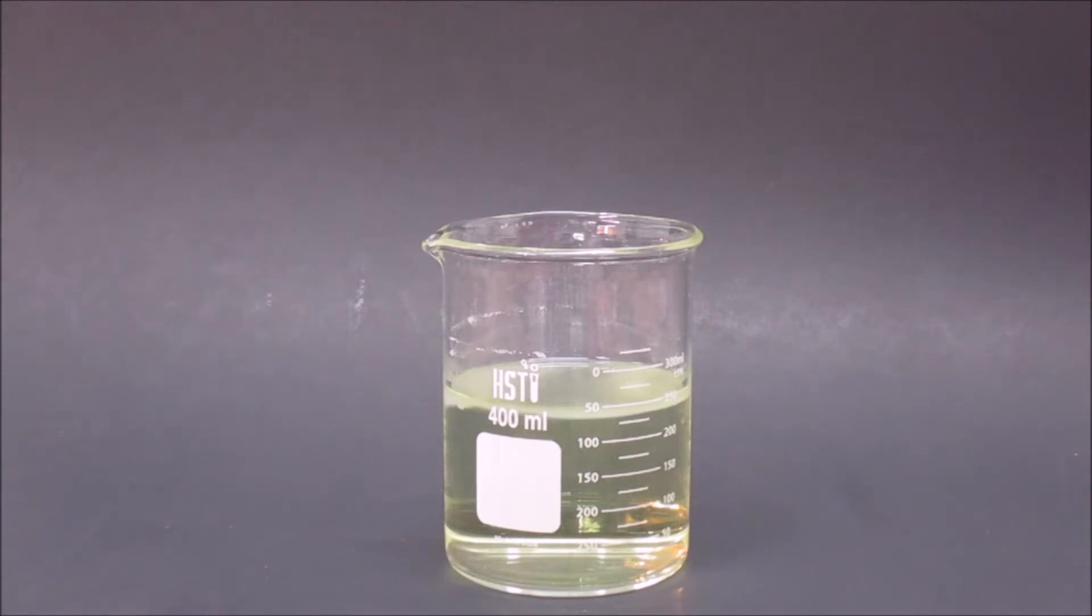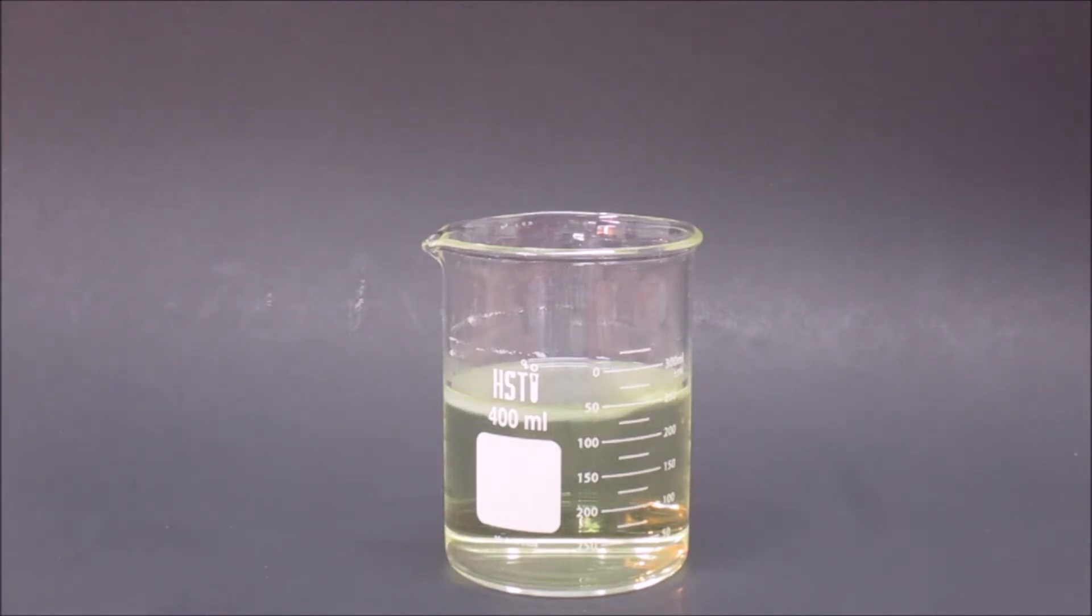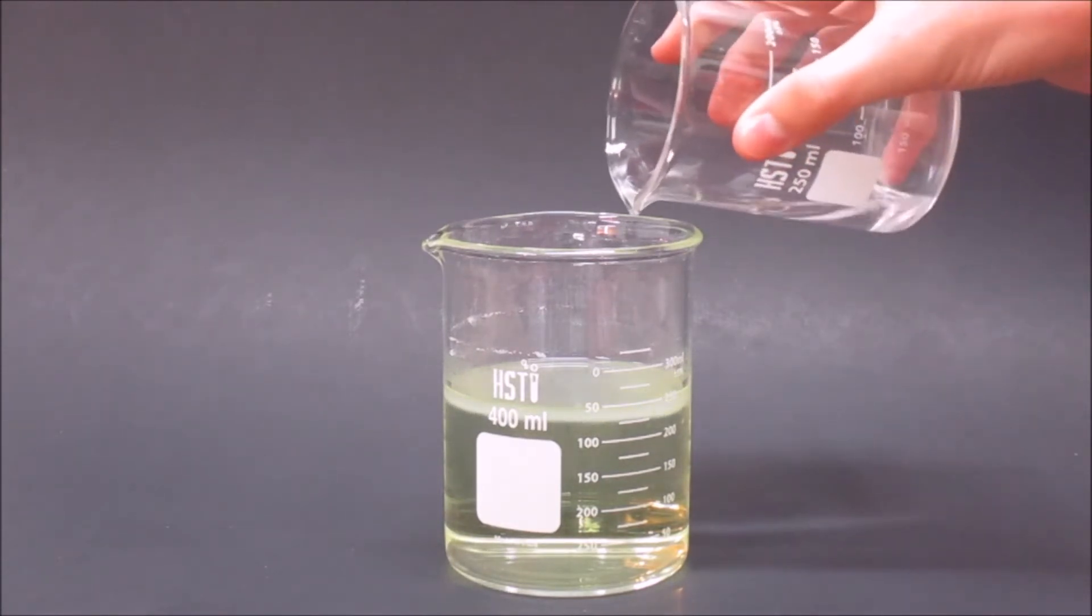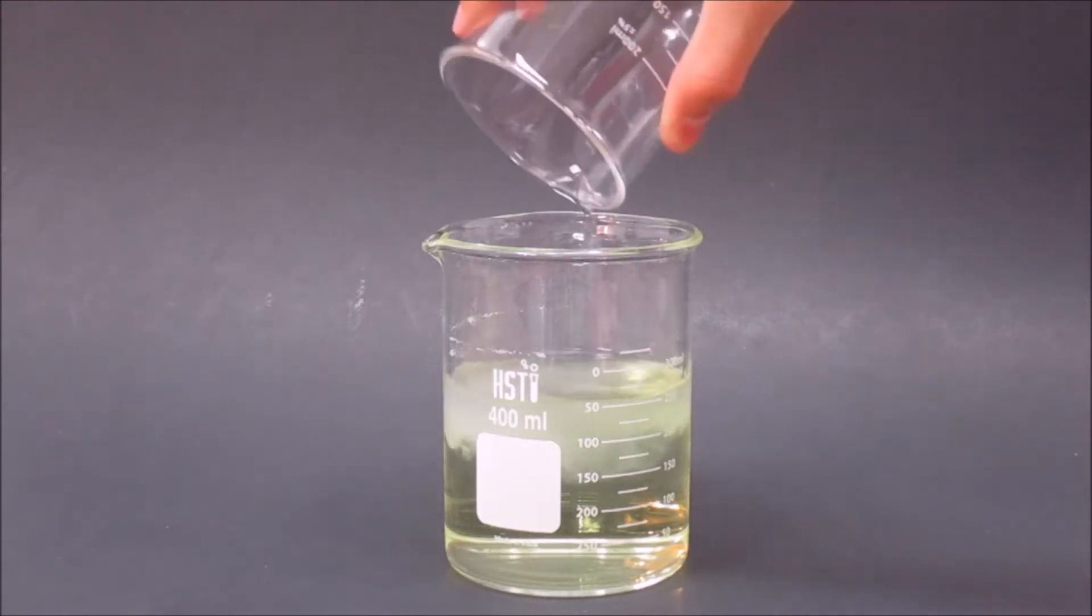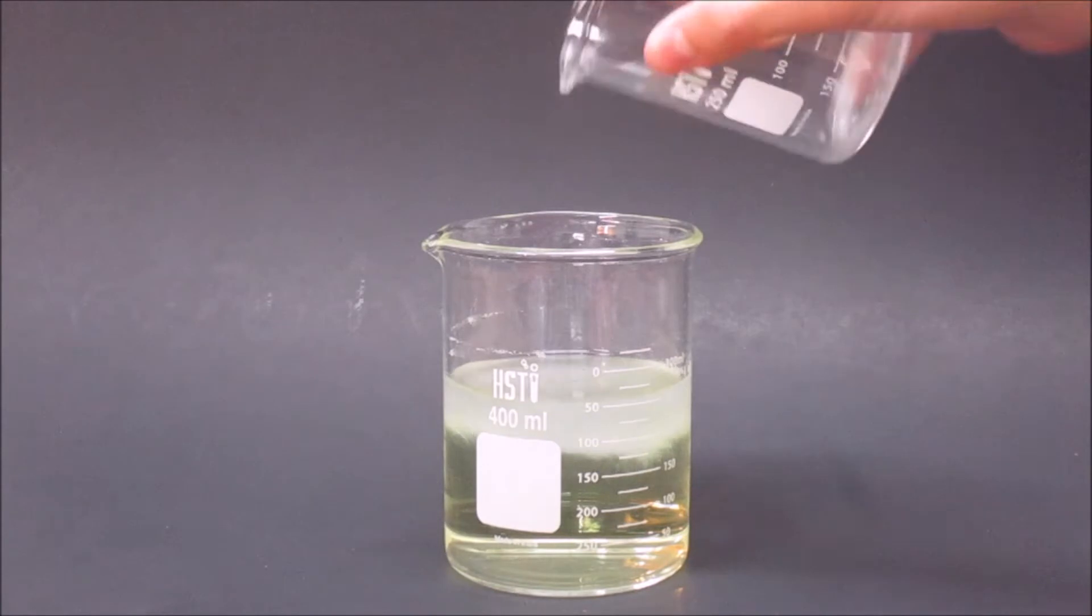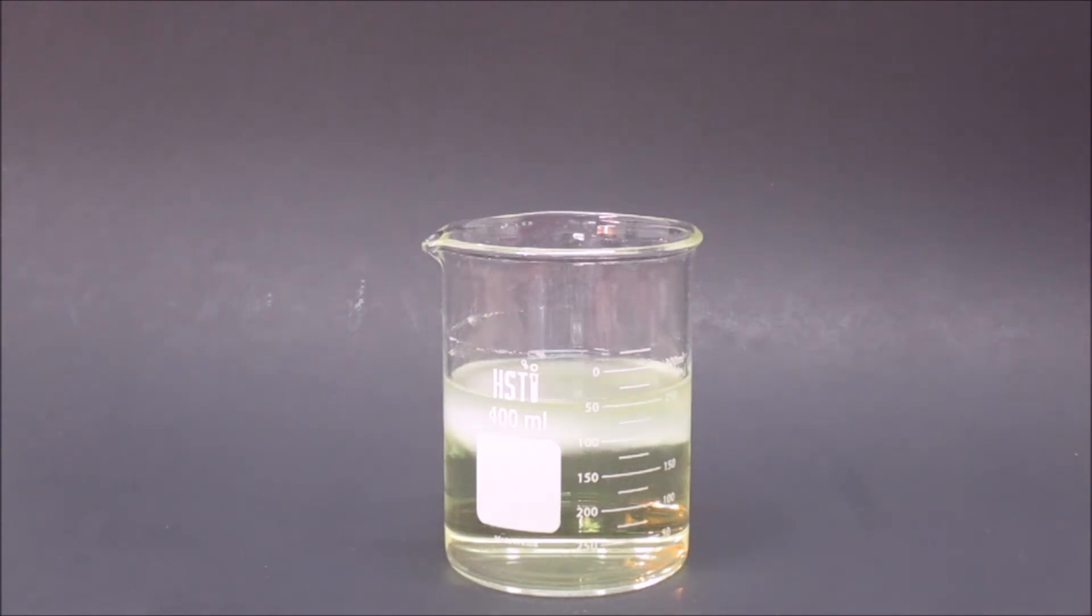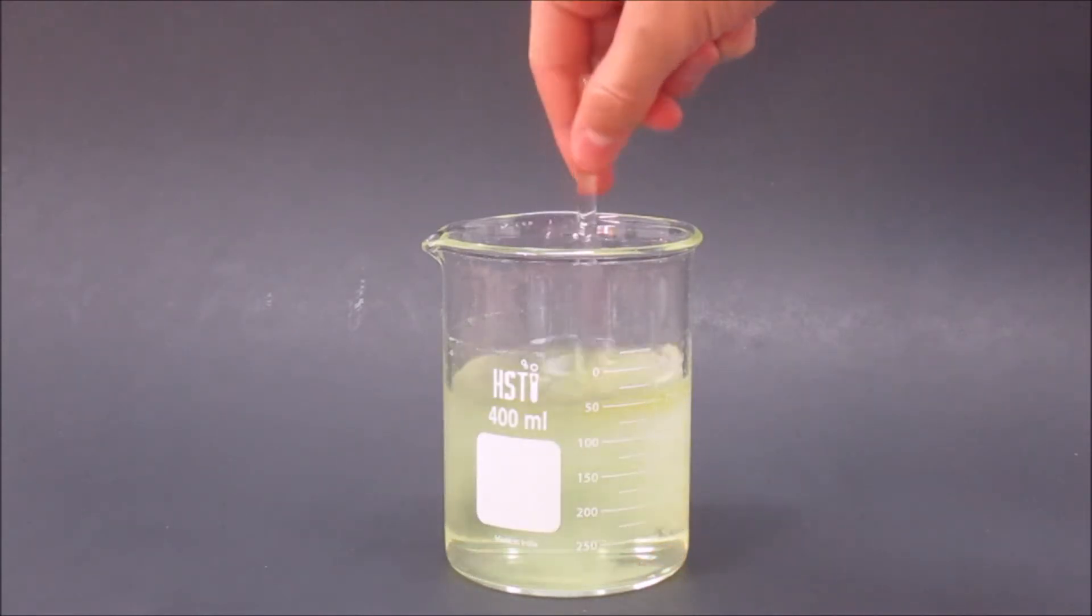A little while after the acetone was added, you can see a white layer forming on top of the bleach. I'm not exactly sure what this layer is, but I think it's a layer of chloroform on top. Then I stirred everything around to mix it up.